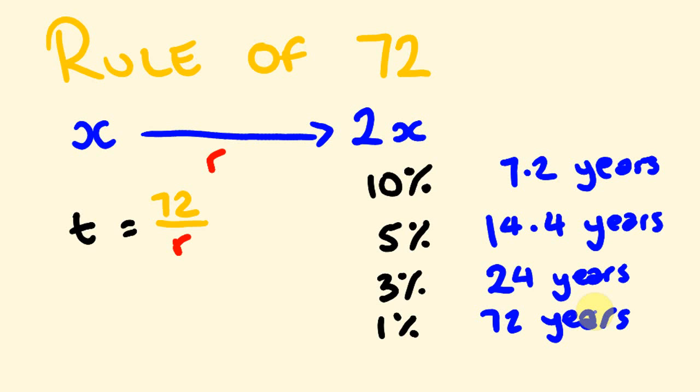Funnily enough, what you can really start to notice with this is how much difference a percentage point can make in terms of growth. If we did this at two percent, we could say at two percent growth it would take 36 years. That's a 12 year difference in the time it takes something to double between two percent and three percent. If we say four percent, we would be at 18 years. That's still a fair degree of difference.